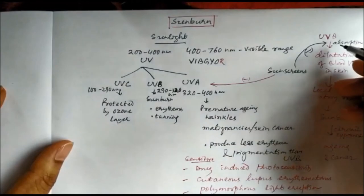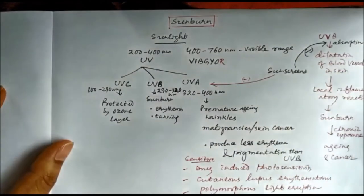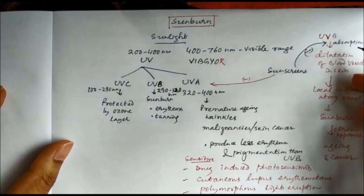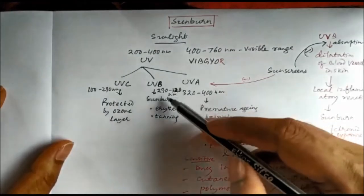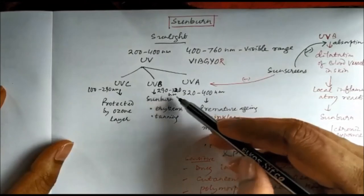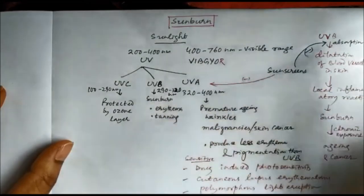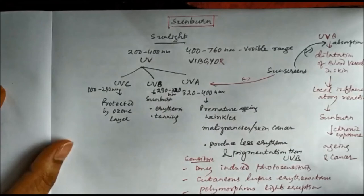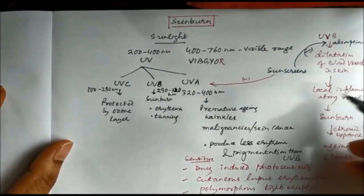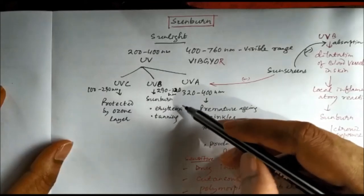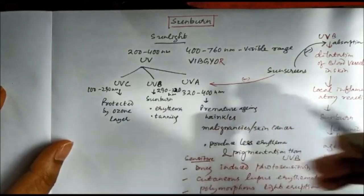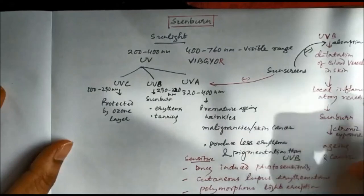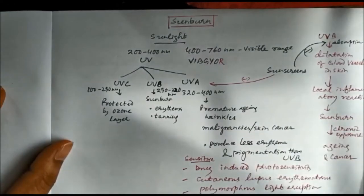When UVB rays — in the range of 290 to 320 nanometer — fall on the skin, they cause dilatation of the blood vessels. This leads to a local inflammatory reaction resulting in erythema and pigmentation, causing tanning, which we call sunburn. Chronic exposure to sunburn causes aging and cancer.